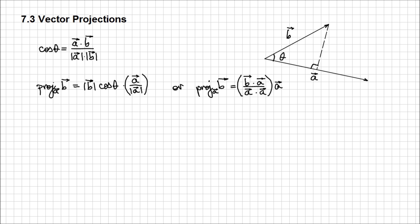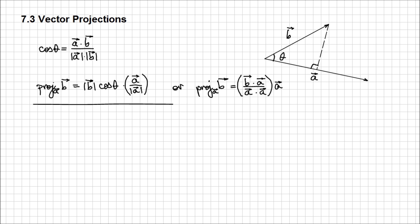Although obvious, let me say that the projection of a vector onto another vector results in a vector. Notice that this portion represents the magnitude of your projection vector, while a over magnitude of a is the direction — essentially the unit vector in the direction of a. The first form is useful when working with geometric vectors, while the second formula is especially useful when working with algebraic vectors.